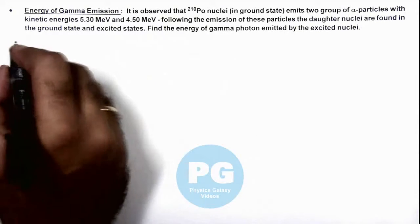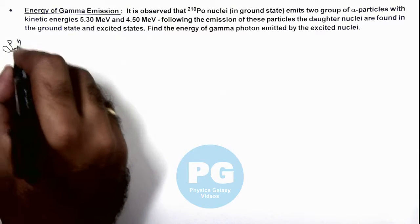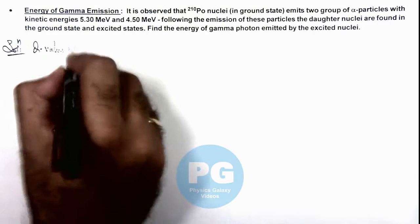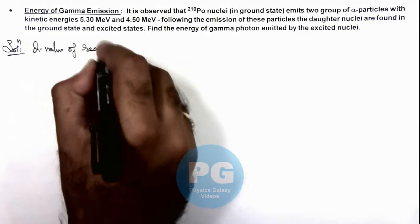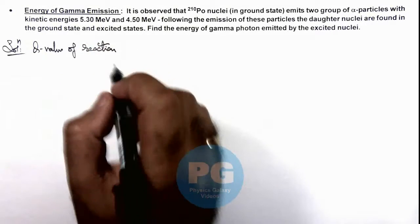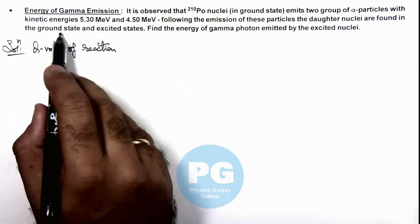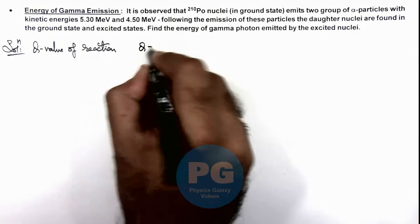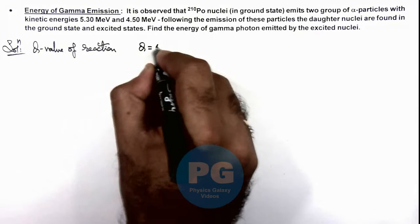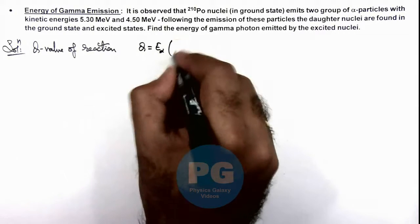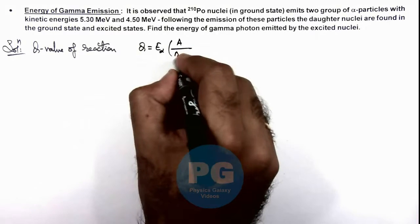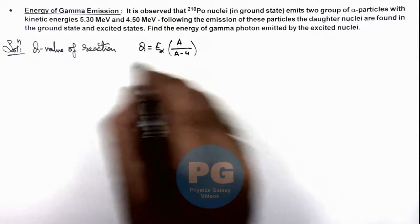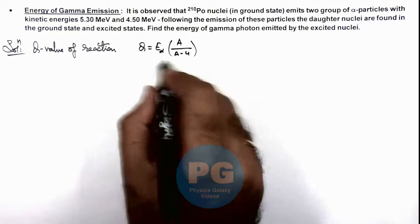First, we can calculate the Q value of the reaction when the nucleus is in ground state after alpha emission. The Q value can be given as energy of alpha particle multiplied by A/(A-4). This expression we already derived in concept videos and discussed in detail.